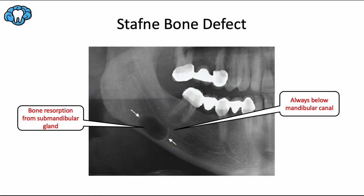Lingual mandibular bone defect, or Staphne bone defect, surprisingly fits in this category of developmental disturbances of the salivary glands. Ectopic or aberrant salivary gland tissue associated with the submandibular gland can cause pressure resorption on the lingual cortical plate of the posterior mandible, resulting in a well-circumscribed unilocular radiolucency. A good way to differentiate it from other lesions is that it always occurs below the mandibular canal, where the inferior alveolar nerve travels through. This lingual concavity requires no treatment and is usually just an incidental finding on a panoramic radiograph.